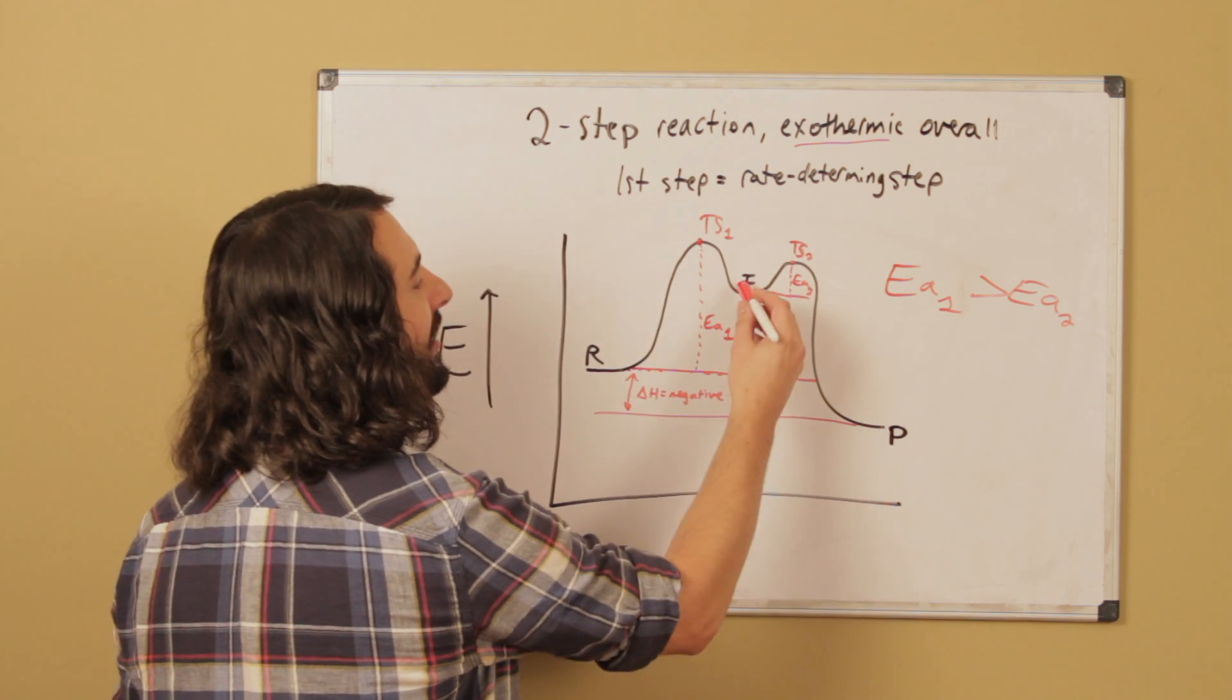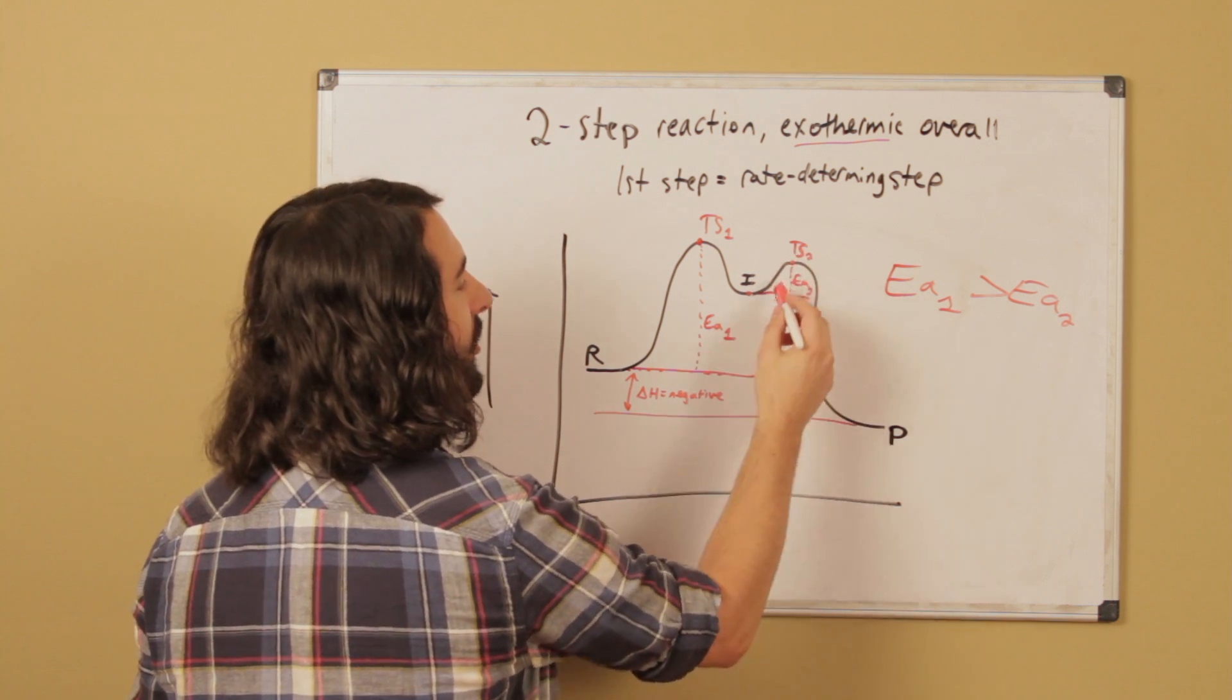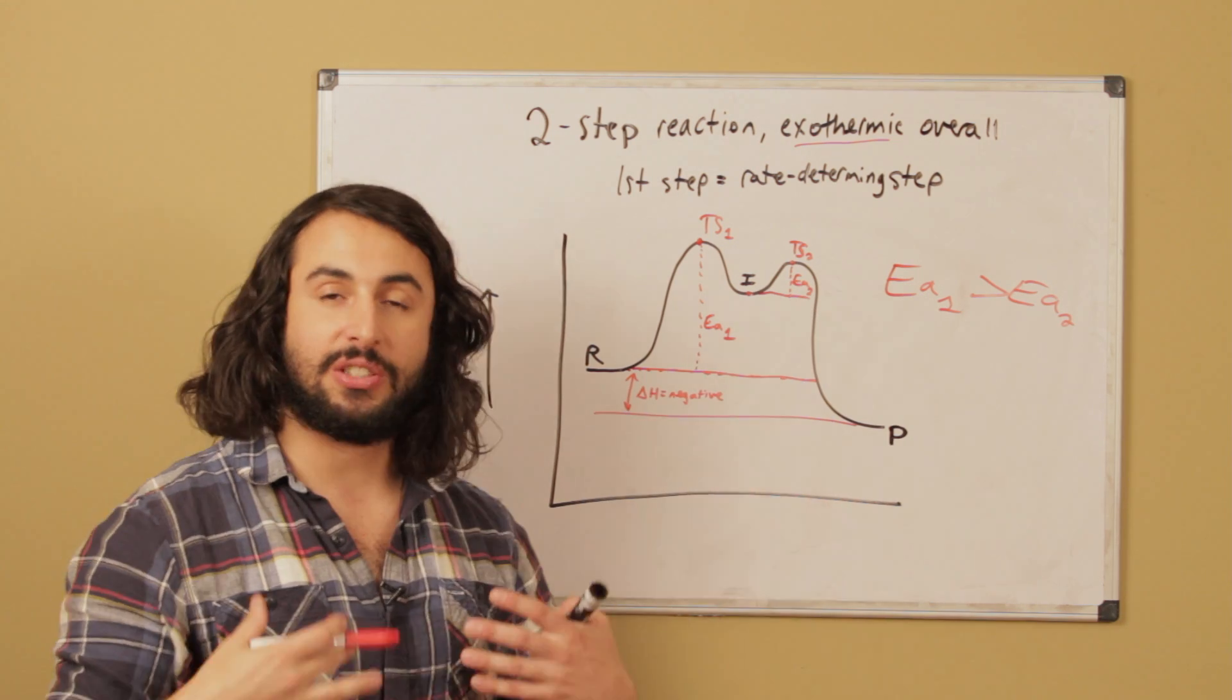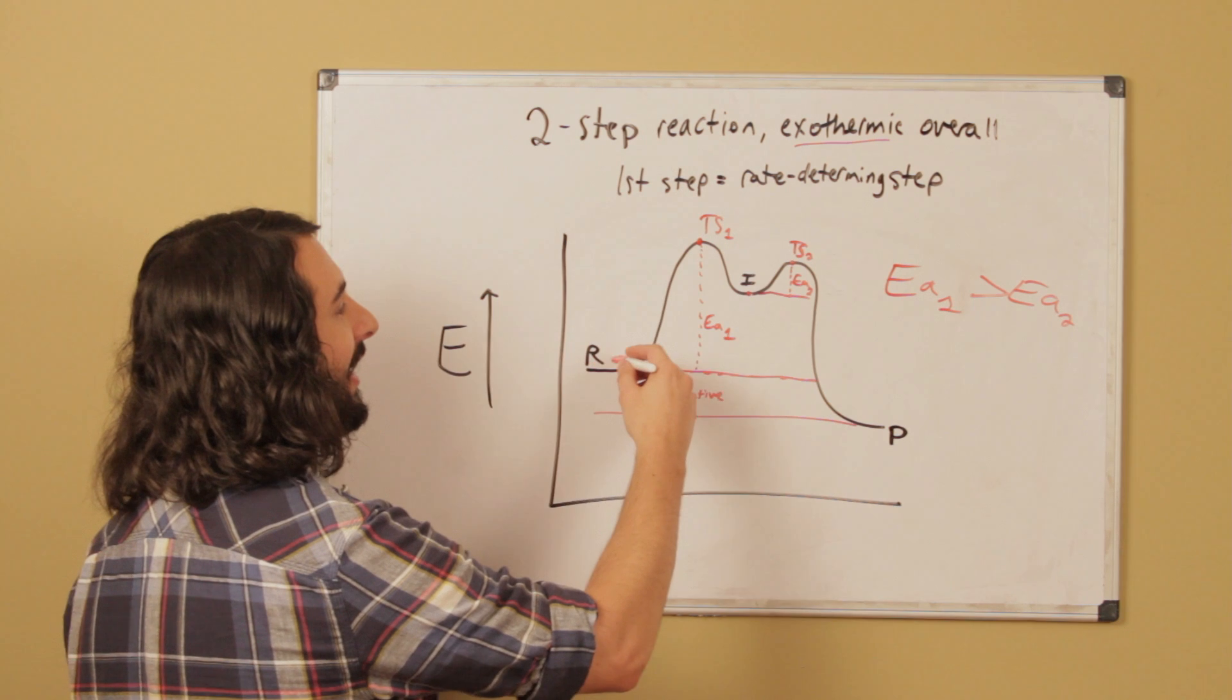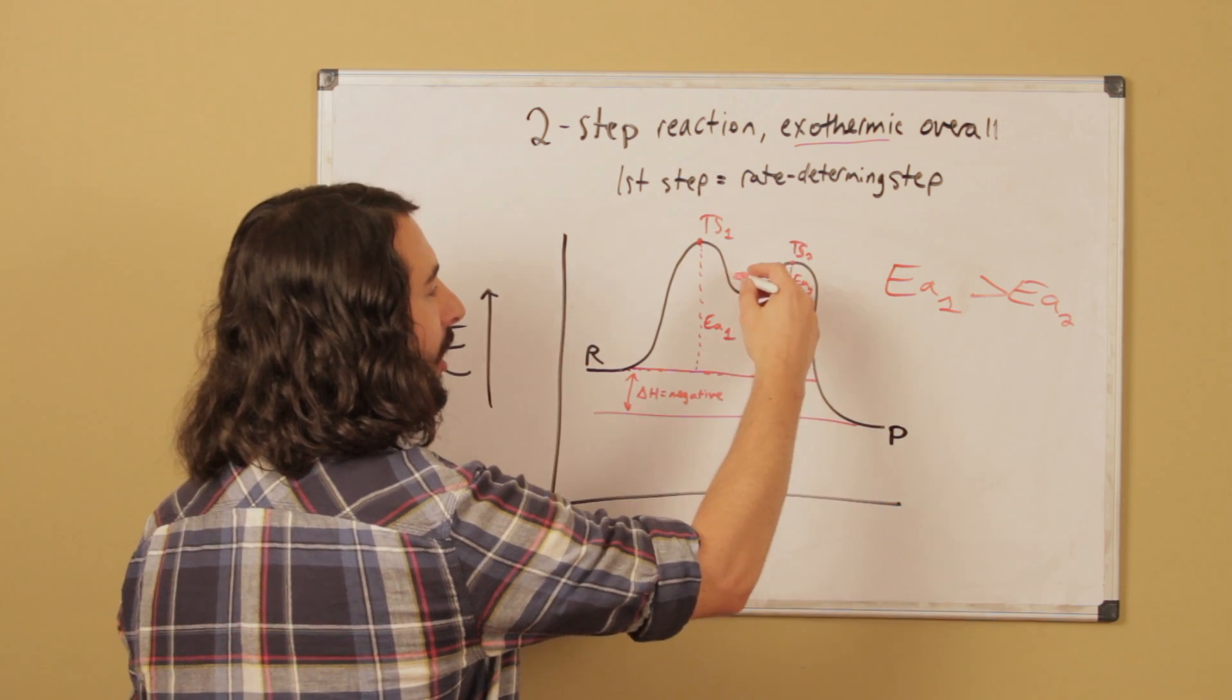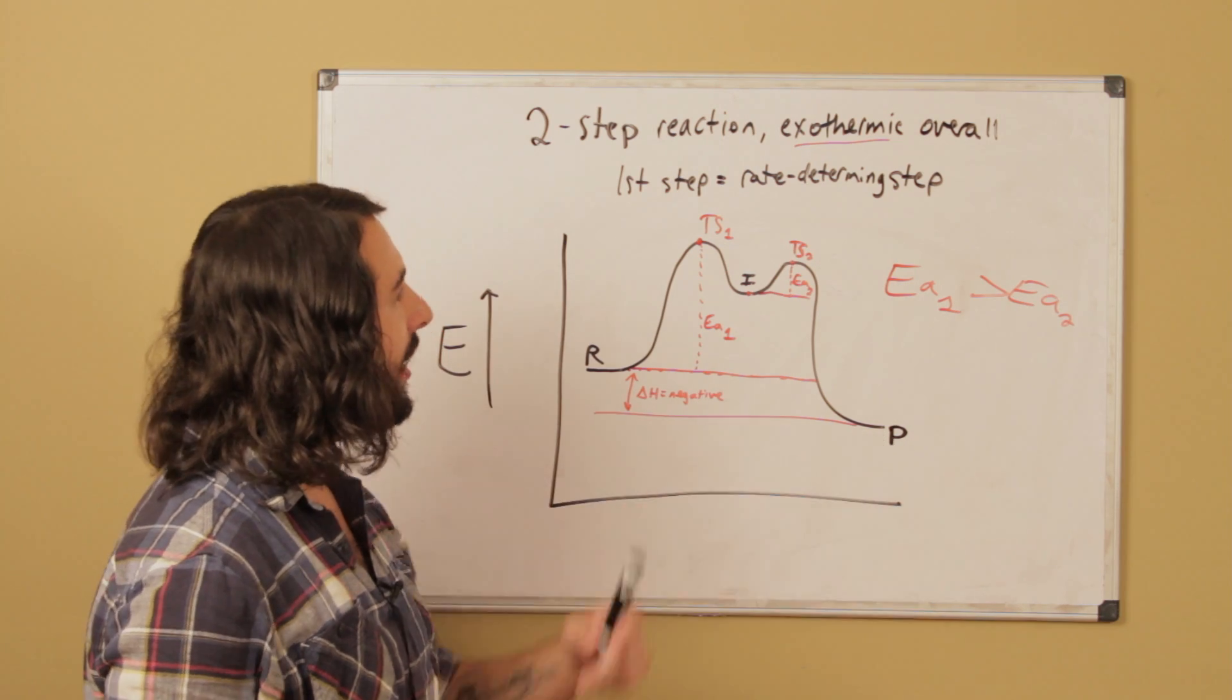Once we reach this intermediate, this relatively much smaller activation energy 2 means that many more collisions will result in a reaction. So once they finally get above this one, they're very quickly going to undergo the second reaction to generate products.